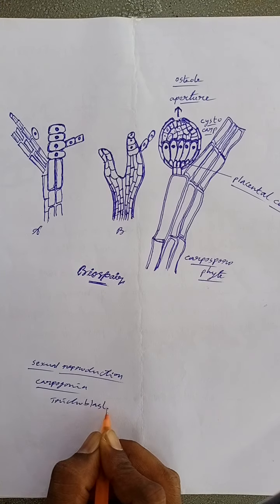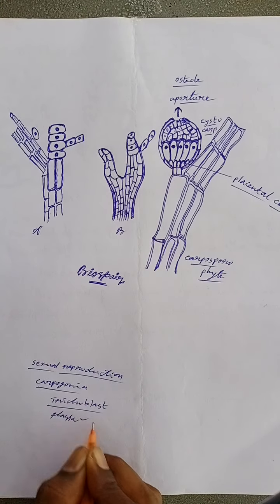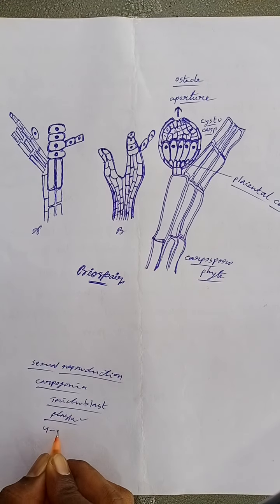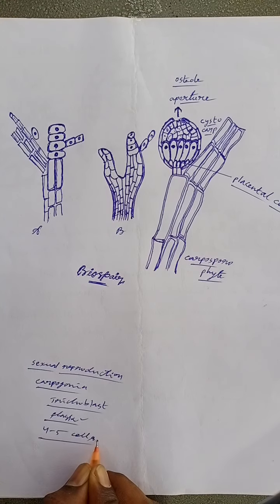A flask-shaped carpogonium develops at the apex of four to five celled carpogonial filament or procarp. One of the pericentral cells of adaxial surface functions as supporting cell.